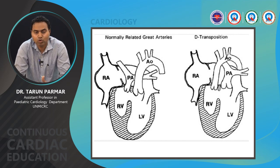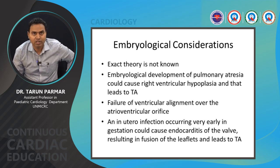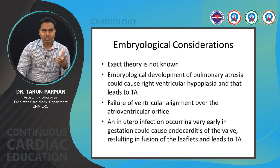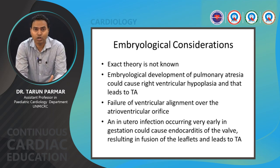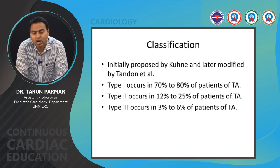The exact embryological cause of tricuspid atresia is not known, but several theories exist. Embryological development of pulmonary atresia may lead to right ventricular hypoplasia and then tricuspid atresia. Another theory is failure of ventricular alignment over the atrioventricular orifice. A third possibility is in-utero infection causing infective endocarditis of the tricuspid valve, leading to fusion of the leaflets and resulting in tricuspid atresia.